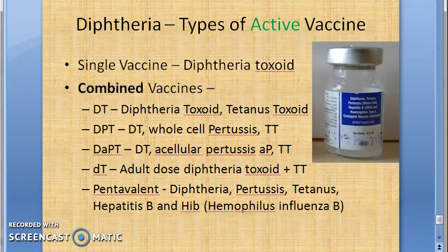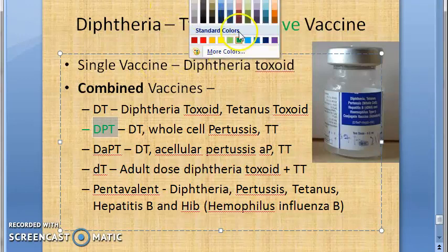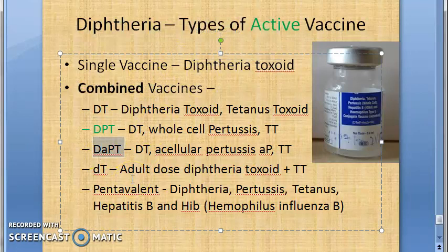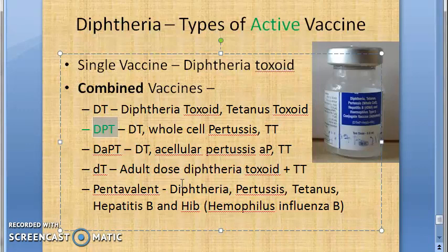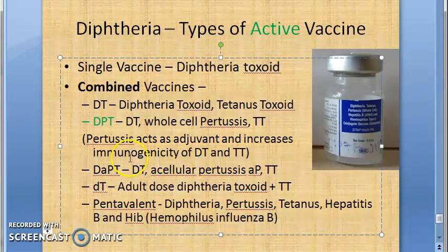DPT is the preparation of choice for vaccinating infants. However, as mentioned, it can cause fever - DTaP will not cause that much fever because it uses the acellular component. DPT is preferred because infants can be immunized simultaneously against three important childhood diseases. Also, the pertussis component acts as an adjuvant and increases the immunogenicity of diphtheria toxoid and tetanus toxoid.